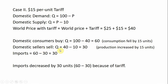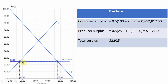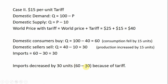Domestic sellers will sell more at the higher price of $40: plugging $40 into the supply curve gives 40 minus 10 equals 30 units, so domestic production increased by 15 units. The difference between 60 and 30 is imports — now only 30 units. Compared to the first case where imports were 75 minus 15 equals 60, we have a 30-unit reduction in imports.